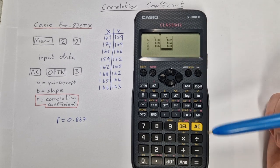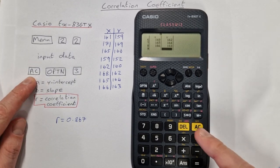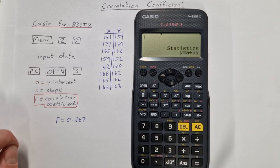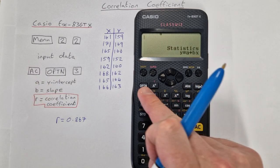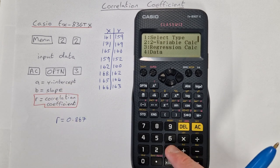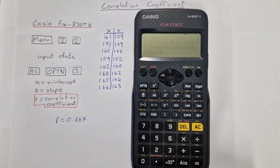So we have all our data input. Then next step is we press AC, goes back to this screen here, then option which is up here on the left, and 3 for regression calculations. So 3.